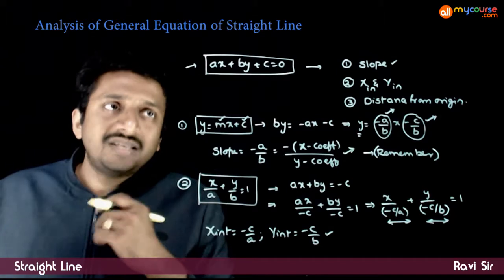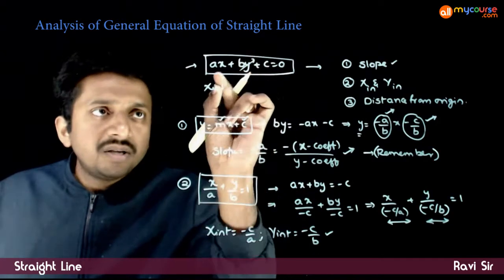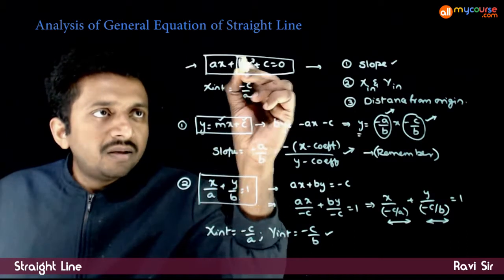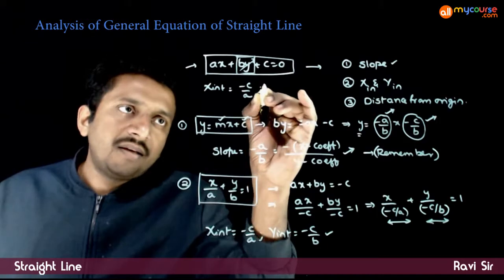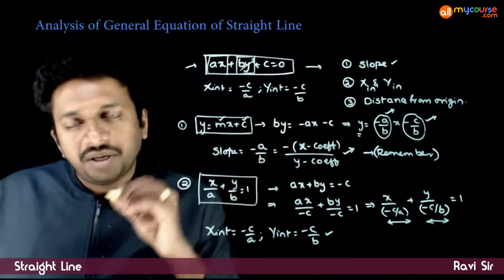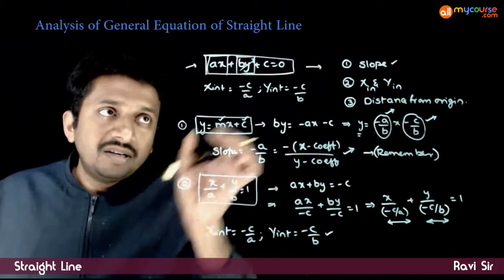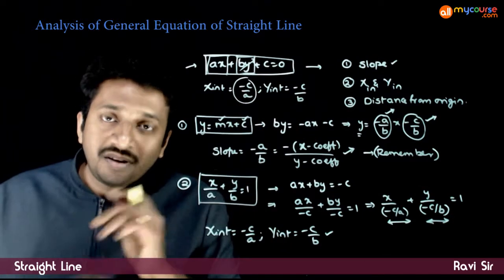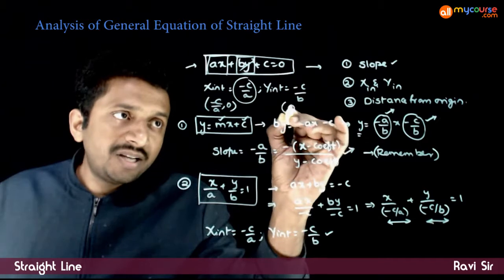However, you are not expected to remember this formula because it is very easy to find intercepts another way. The easiest way: if you want the x-intercept, just put y is equal to 0. Then ax plus c is equal to 0, so x is minus c by a. If you want the y-intercept, put x is equal to 0. Then by plus c is equal to 0, so y is equal to minus c by b. So x-intercept: put y equal to 0; y-intercept: put x equal to 0. The x-intercept point is (minus c by a, 0) and the y-intercept point is (0, minus c by b).